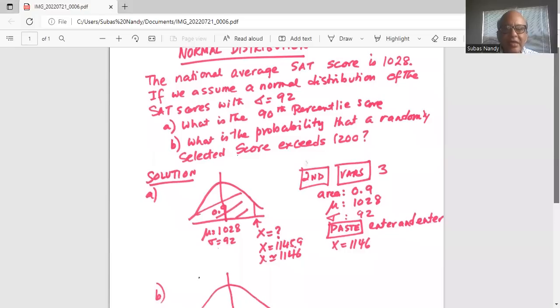So, 90th percentile means we want to find the unknown X on the horizontal axis below which the area under the normal curve is 0.9. That is, 90 percent of the scores are below this unknown score X.